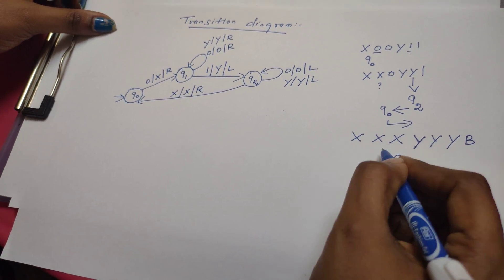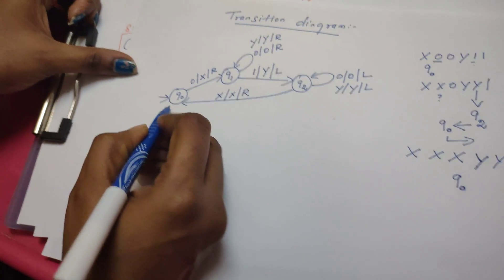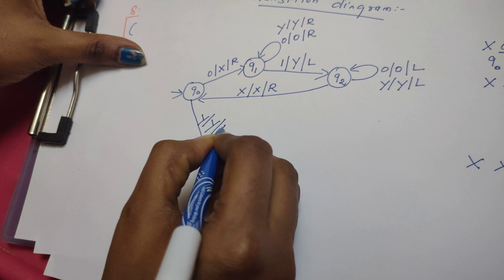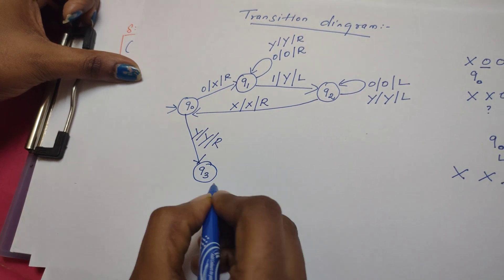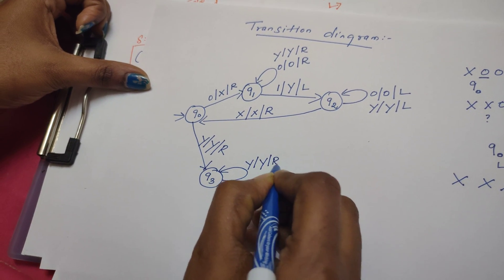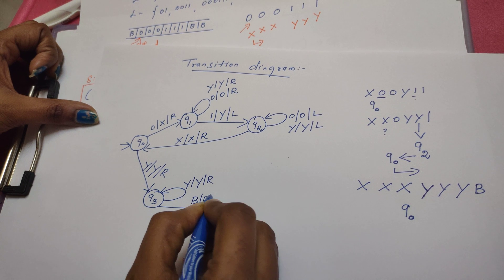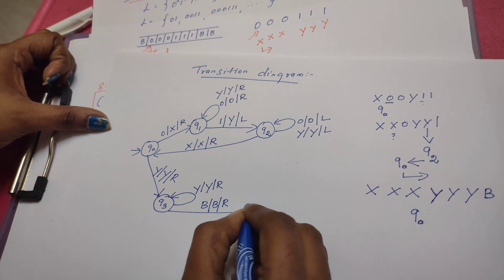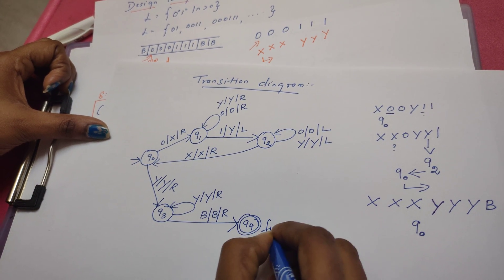To complete the design: from q0, when the machine reads y it moves right and changes state to q3. From q3, the machine reads all remaining y's. After reading all y's, if it reads only the blank symbol, this confirms that the count of zeros equals the count of ones. The machine then enters state q4, which is the final or accepting state.